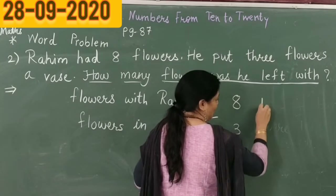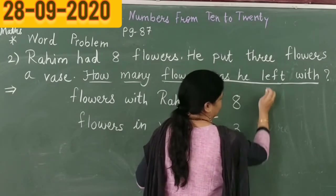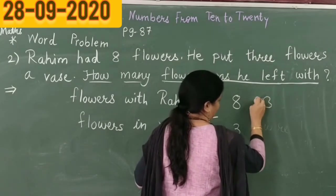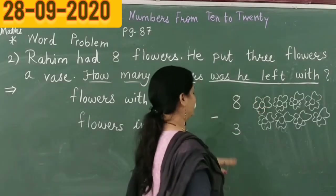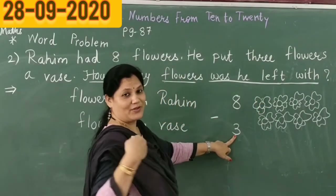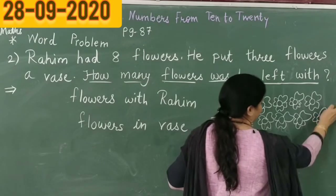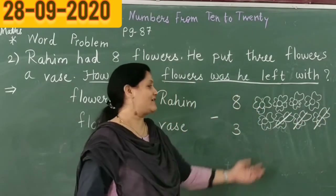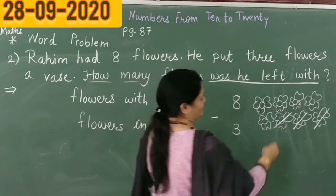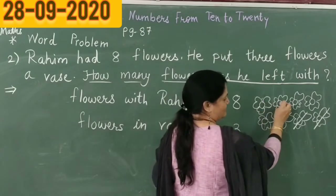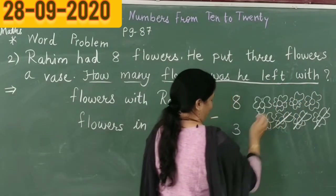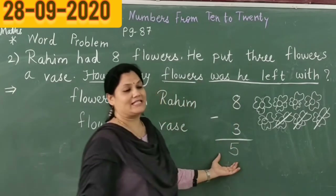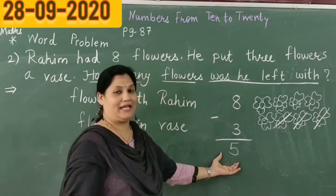So let us draw 8 flowers here. How many flowers are there? We have to cut 3 flowers — out of this we have to remove or take away 3 flowers. So how many are remaining? 1, 2, 3, 4 and 5. So 5 flowers are remaining now.